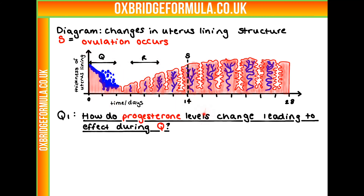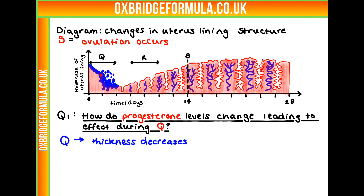The first question we have to work out is how does progesterone level change, leading to the effect during Q? So let's look at what happens in Q. Here we can see that the uterus lining — the thickness decreases. So we're looking for something that causes the thickness to decrease. Let's look at what progesterone does — what is its function in the body?